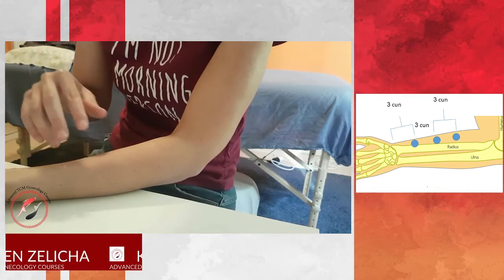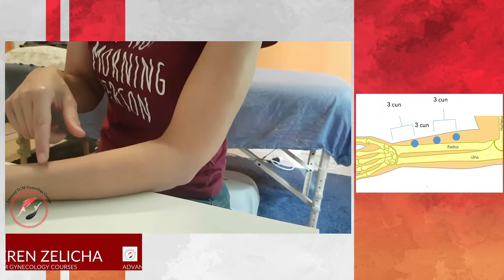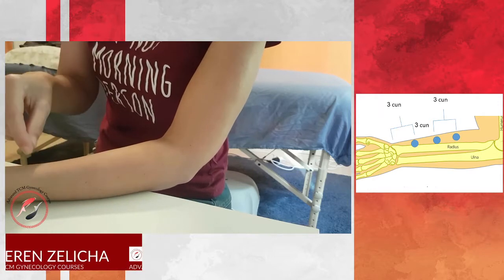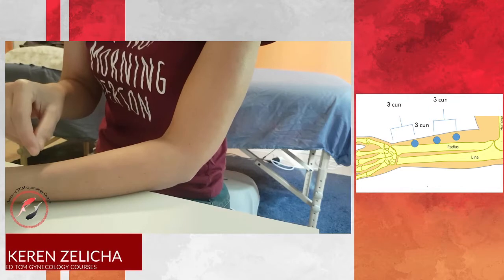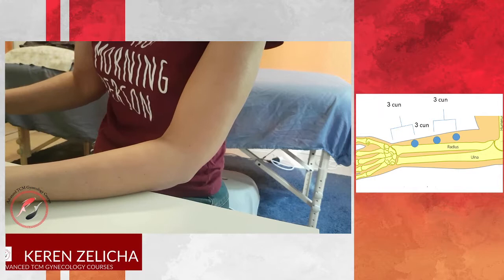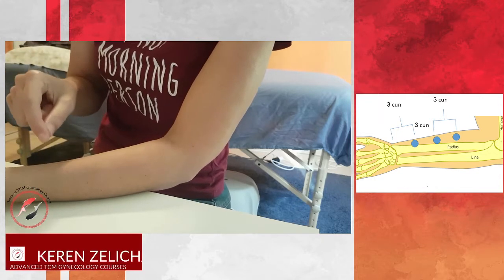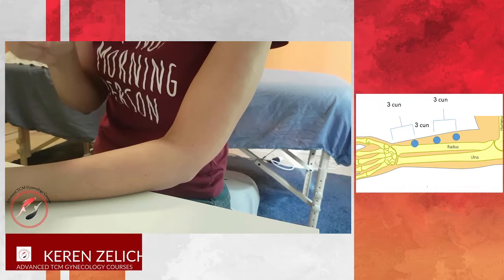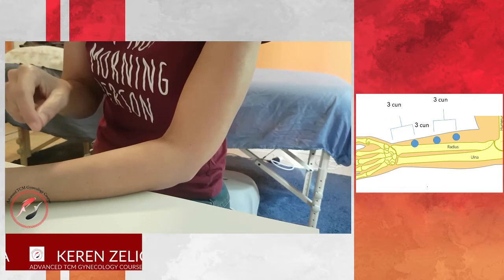Now, when we puncture, there is also a very important thing to remember. Remember that the depth of the needle, the needling, is very important. For lung issues, you usually use superficial needling, meaning that you puncture, let's say, half a tsun till one tsun.